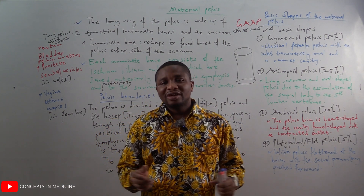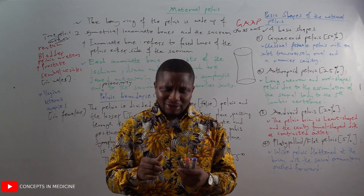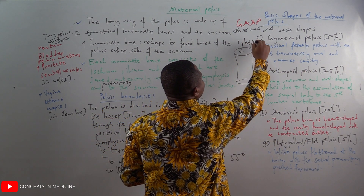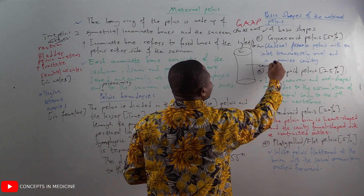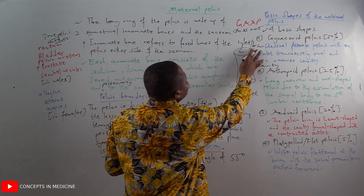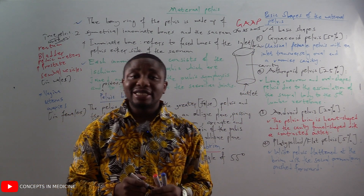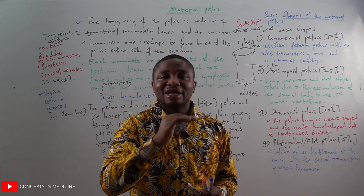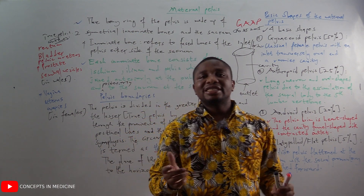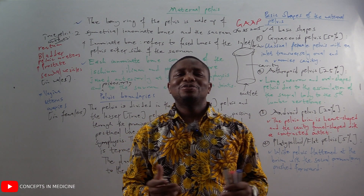To summarize the pelvic regions: the inlet is also called the brim, below that is the cavity, and below that is the outlet. The pelvic inlet is an oblique plane, and it separates the greater pelvis (false pelvis) above from the lesser pelvis (true pelvis) below.